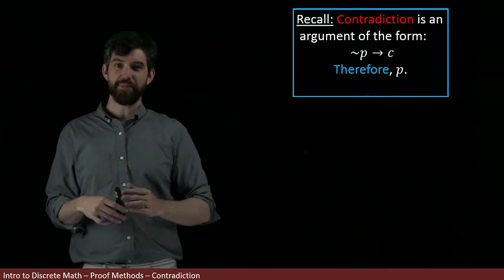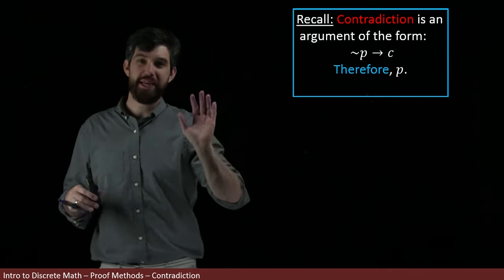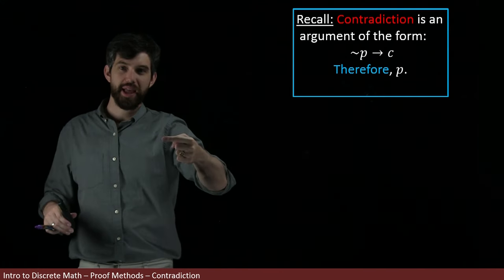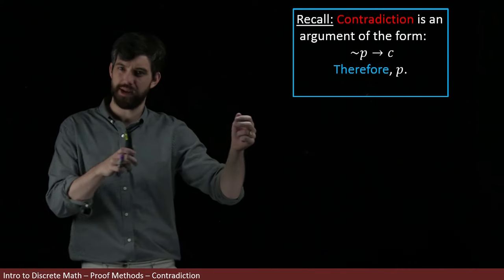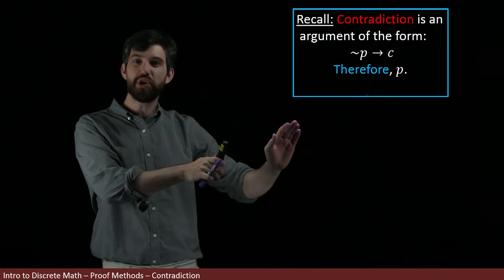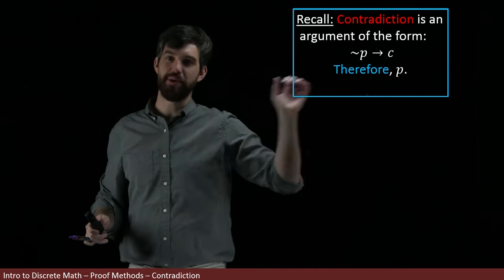It says that if I want to prove a claim P, what I could do instead is assume not P, and if not P forced some contradiction, some nonsensical statement, that was going to demand that indeed we had the statement P.